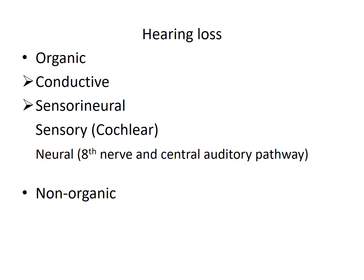Hearing loss is classified into Organic or Non-Organic Hearing Loss. Organic Hearing Loss means we are able to identify some cause. However, if there is no identifiable cause then it is termed as Non-Organic Hearing Loss. Organic Hearing Loss is further classified into Conductive and Sensory Neural types.